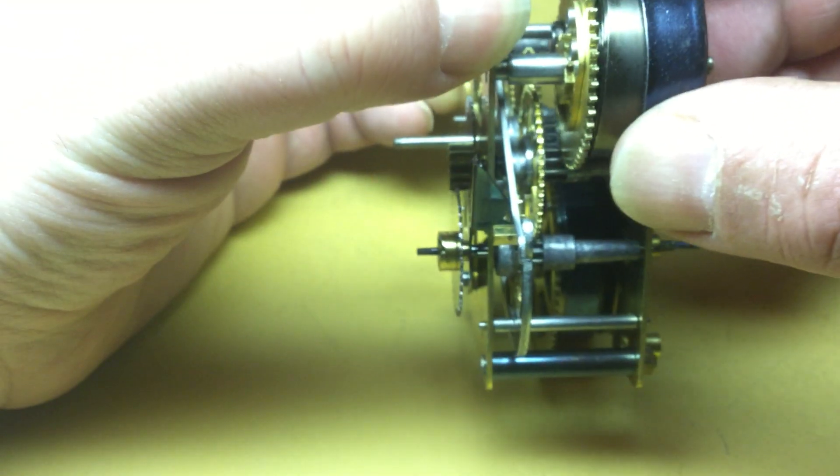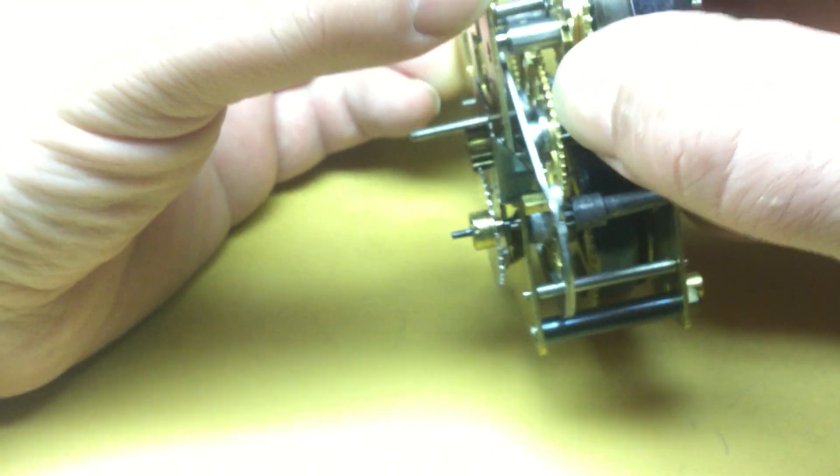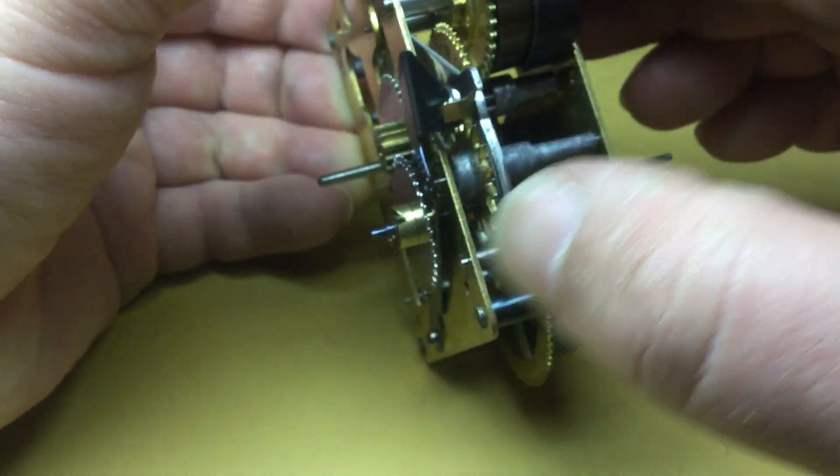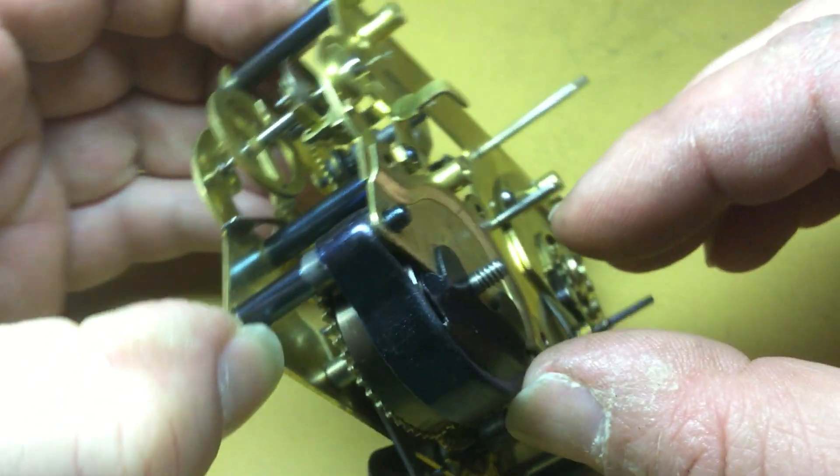And let's make sure that the hook will catch on the alarm before we try to install it. And then you've got to, of course, get the alarm main wheel engaged with the lantern pinion on the second wheel, so you've got to kind of swing it in like that.